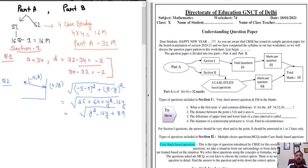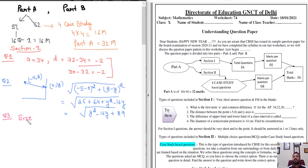Question 3: The difference of the upper limit and the lower limit of a class interval is called the class size. So the answer is 'size' — the size is the difference between the upper limit and the lower limit of a class interval.